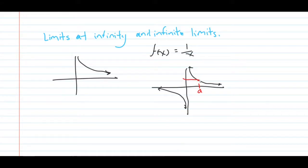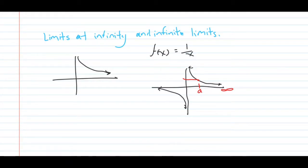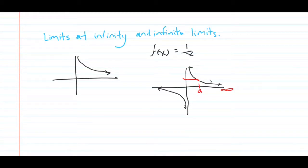When we do limits at infinity, infinity will still be on the x-axis just like a, but it is infinite — a number we can't count. For the function 1 over x, the y-axis is a vertical asymptote and the x-axis is a horizontal asymptote. The function never touches either axis. So as x approaches positive infinity, the function gets lower and lower, approaching 0.